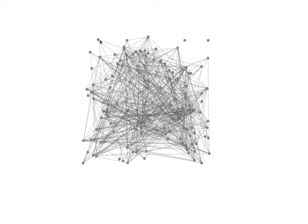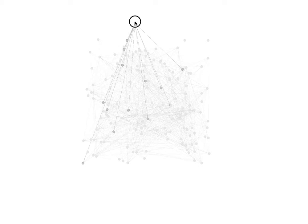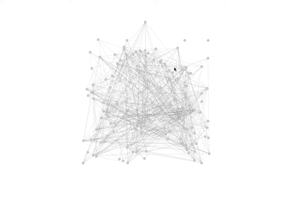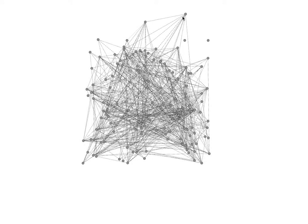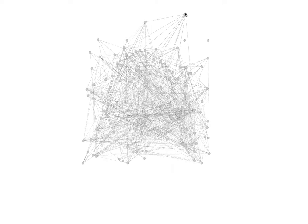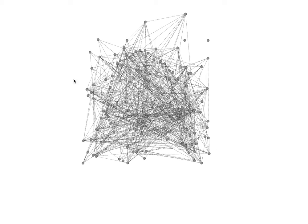This is a network graph and it shows all my Facebook friends. Each of these little dots represents a person, and each of the lines that connect the dots means that these people are friends. All these people in this graph are my friends, but a line between different people means those two people are friends with each other. Dots on their own mean they're not friends with anyone else out of my friends.